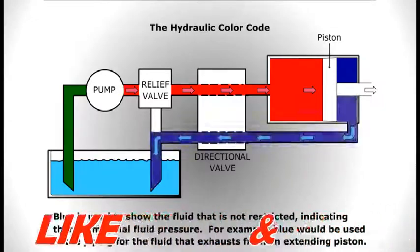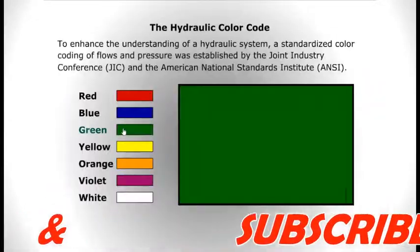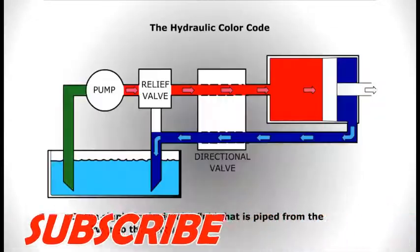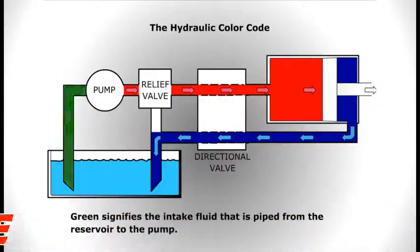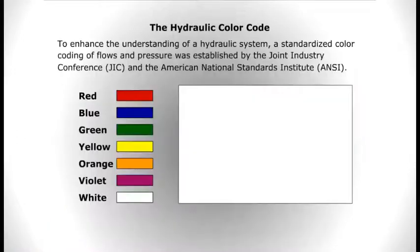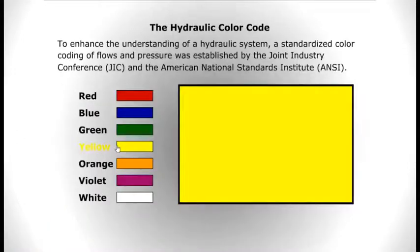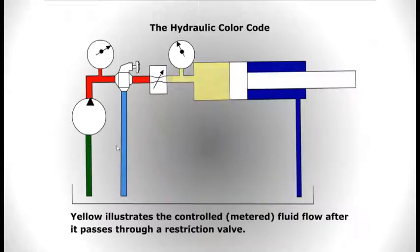Green signifies the intake fluid that is piped from the reservoir to the pump. Yellow illustrates the controlled fluid flow after it passes through a restriction valve.